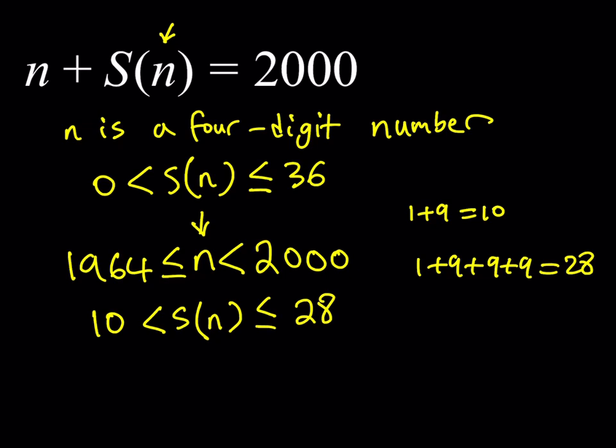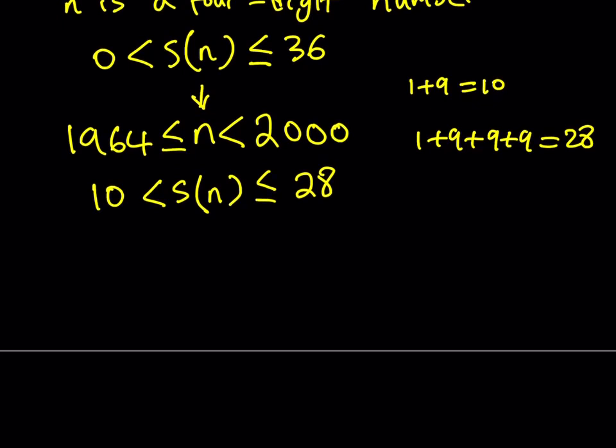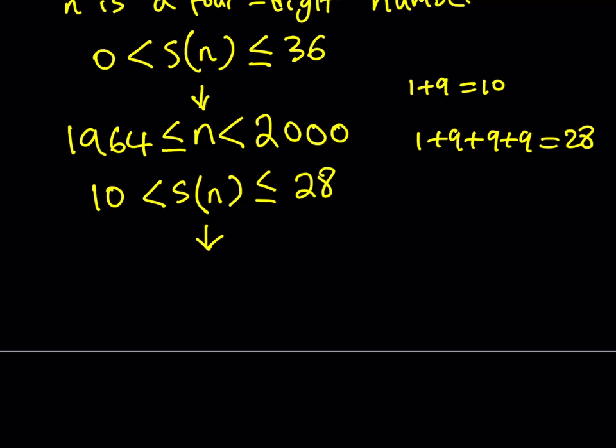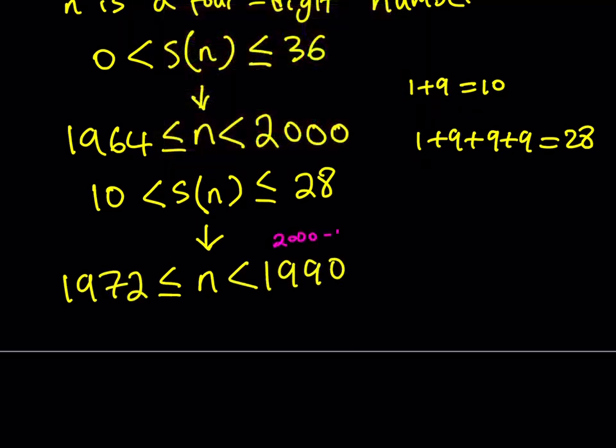Great. Now, this inequality actually gives us something nicer than the first one, if you think about it. Since S(n) is going to be between those two numbers, and if you consider the fact that their sum is going to be 2000, you can safely say that n is going to be between 1972 and 1990. In this case, we're basically saying that this is 2000 minus 10, and this is 2000 minus 28.